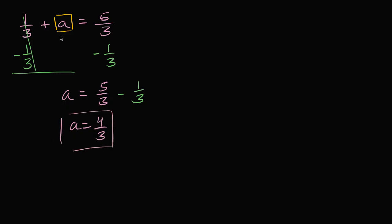And you could check to make sure that works. One-third plus four-thirds is indeed equal to five-thirds. Let's do another one of these. So let's say that we have the equation k minus eight is equal to 11.8.